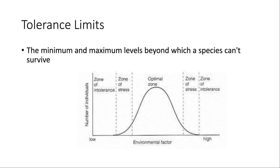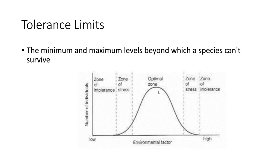We can think of tolerance limits in terms of a graph. The environmental factor on the X-axis can be pretty much anything: temperature, amount of light, pH, and more. The bell curve represents whatever organism we're looking at. The largest part — highest on the Y-axis — is where most of the organisms live: the optimal zone for that factor. That's where most organisms will survive.